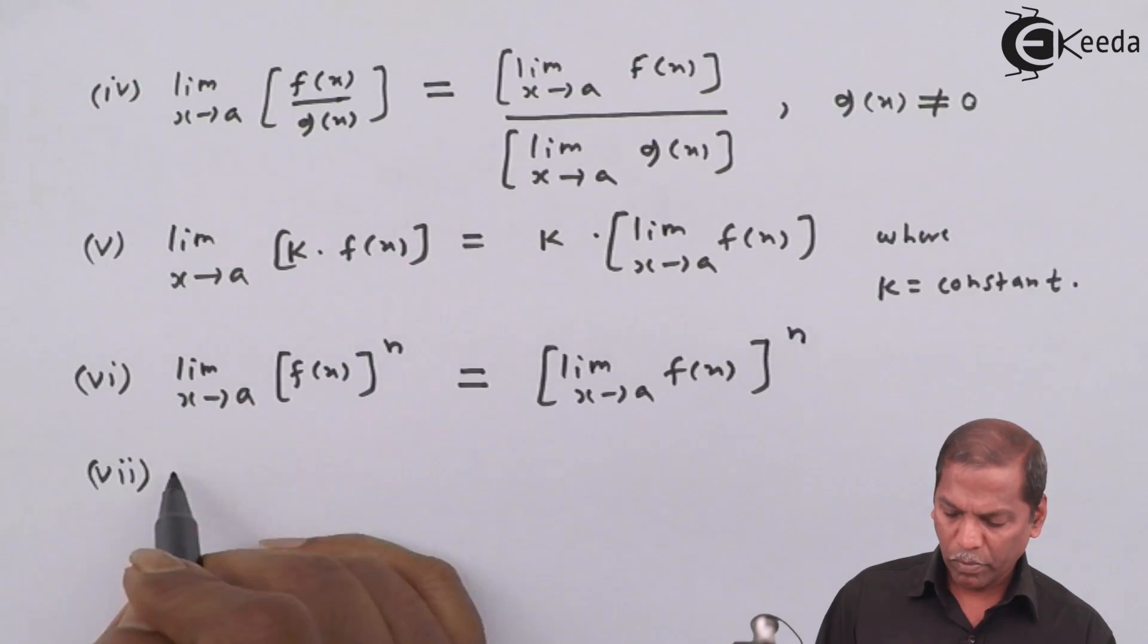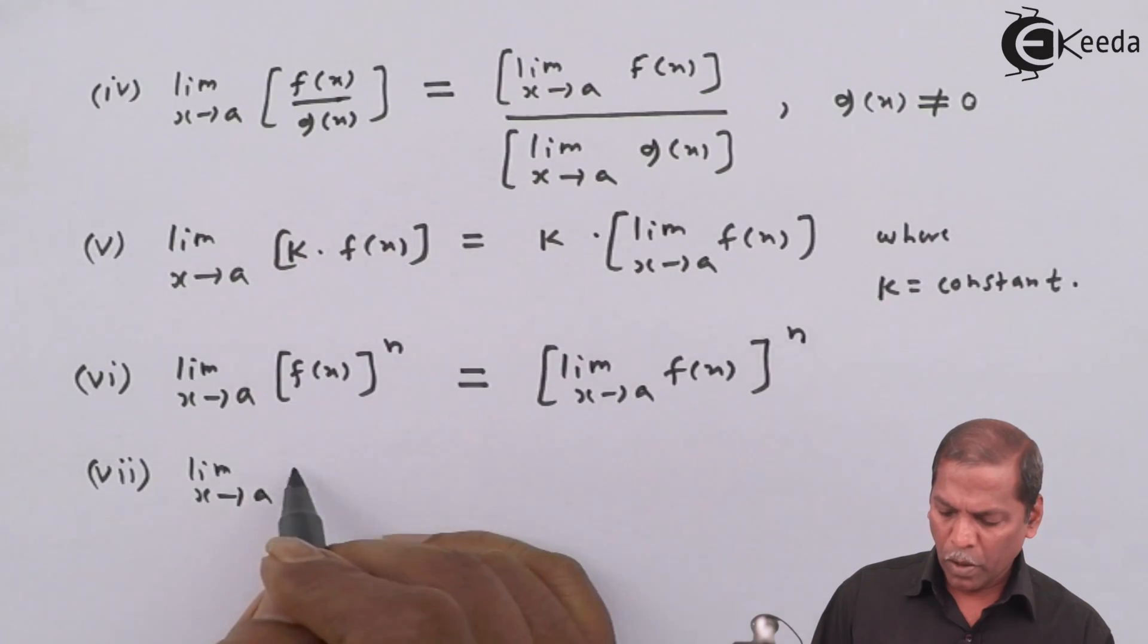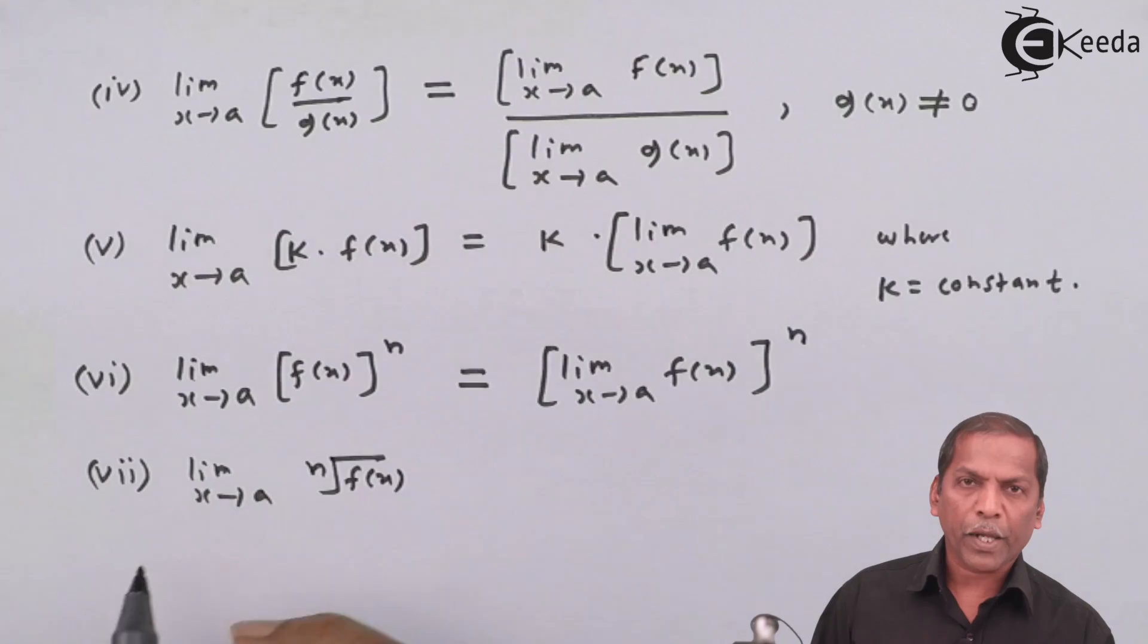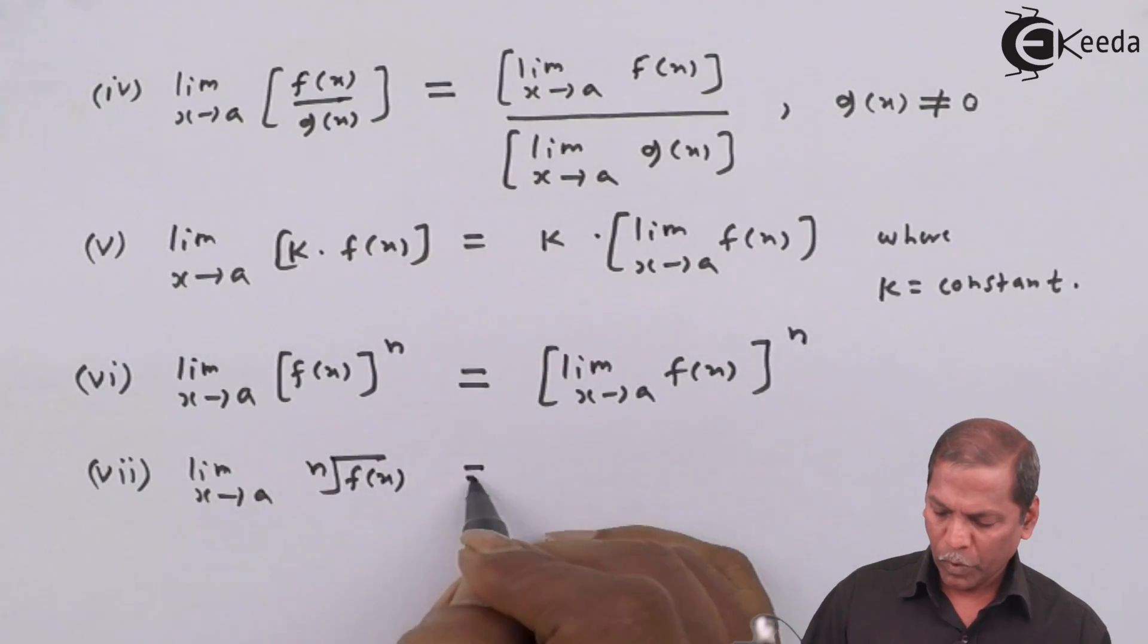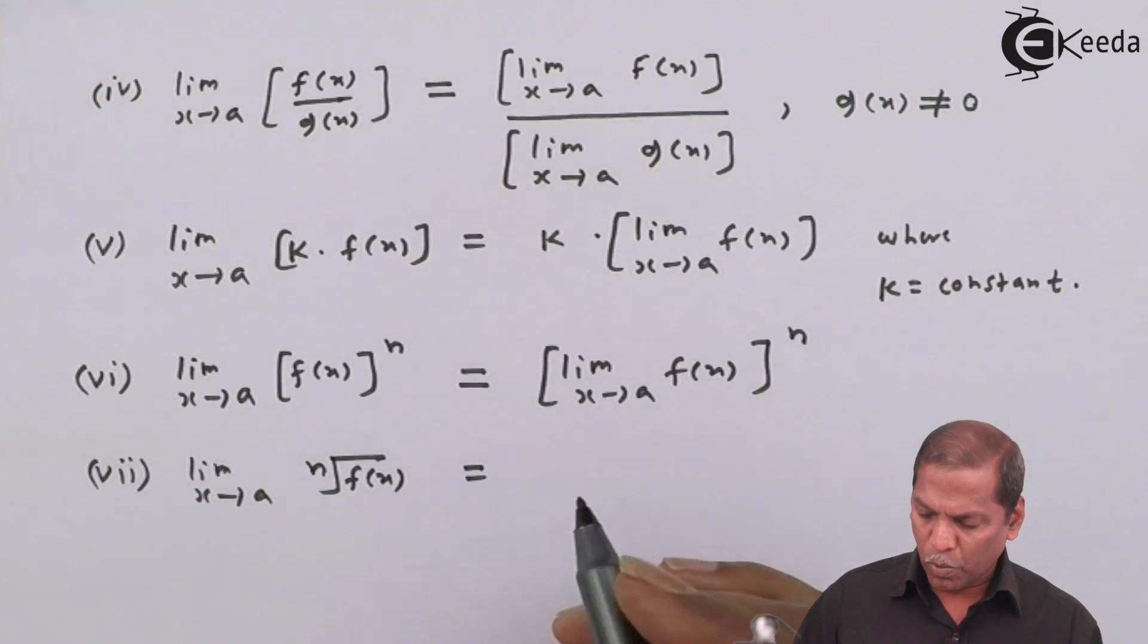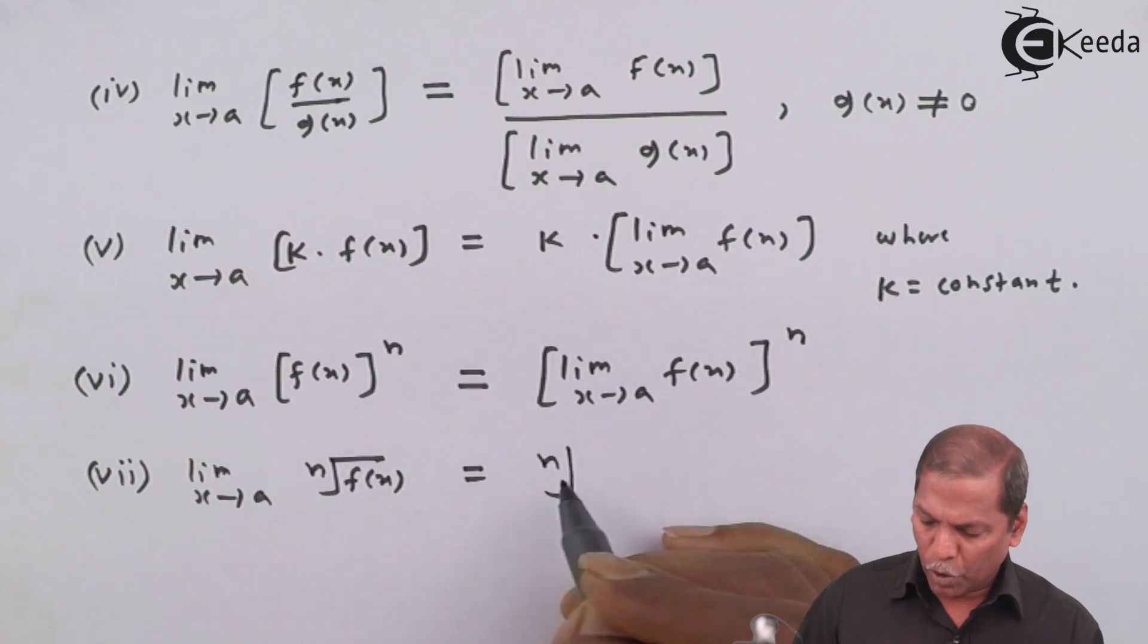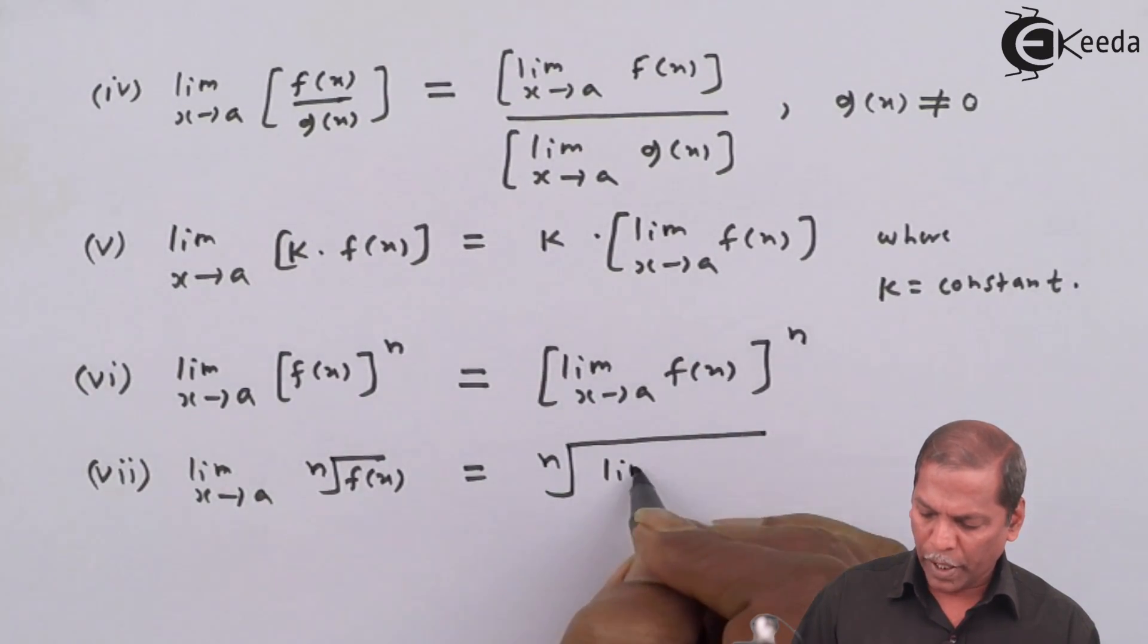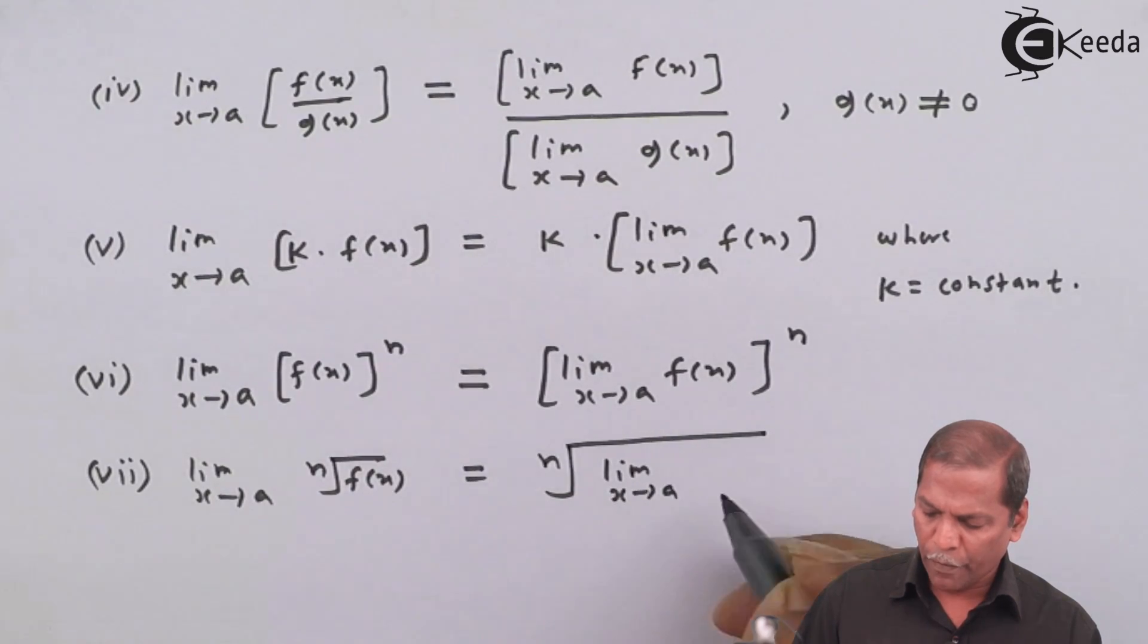Number 7: limit x tends to a nth root of f of x, that equal to nth root limit x tends to a f of x.